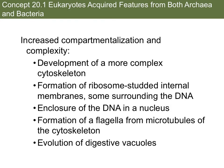As I mentioned, the infolding of the plasma membrane allowed for specific reactions to take place. We call that process compartmentalization. By increasing compartmentalization, you can increase the complexity of the cell. So you get the development of a more complex cytoskeleton. You get the formation of ribosome-studded internal membranes, some surrounding the DNA. You get the enclosure of the DNA in the nucleus. And one of the key things to understand about these formations of these internal membranes is that it's all coming from the plasma membrane.